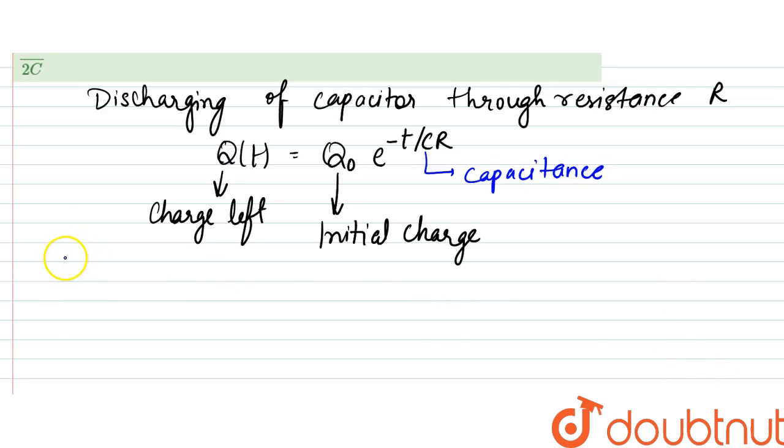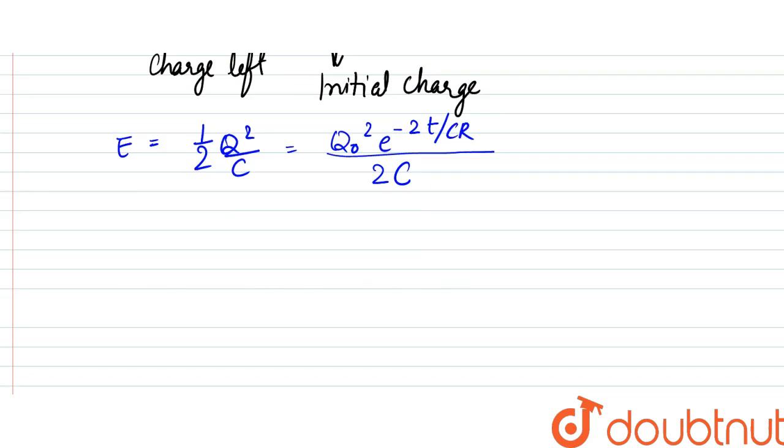Now the energy would be equal to half Q² by C, so that can be written as Q₀²e^(-2t/CR) whole divided by 2C.